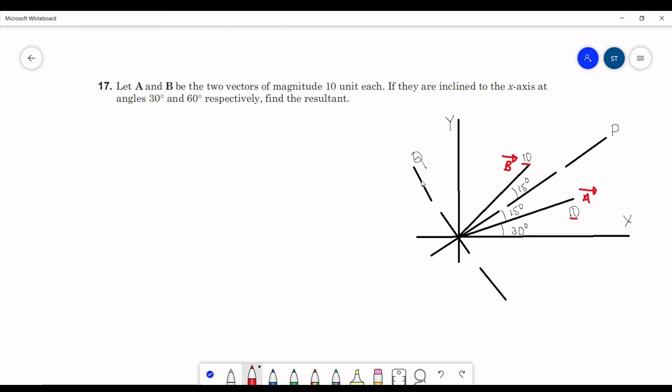Here I am taking two new coordinate axes, p and q. P is along the angular bisector of A and B, and q is perpendicular to p.